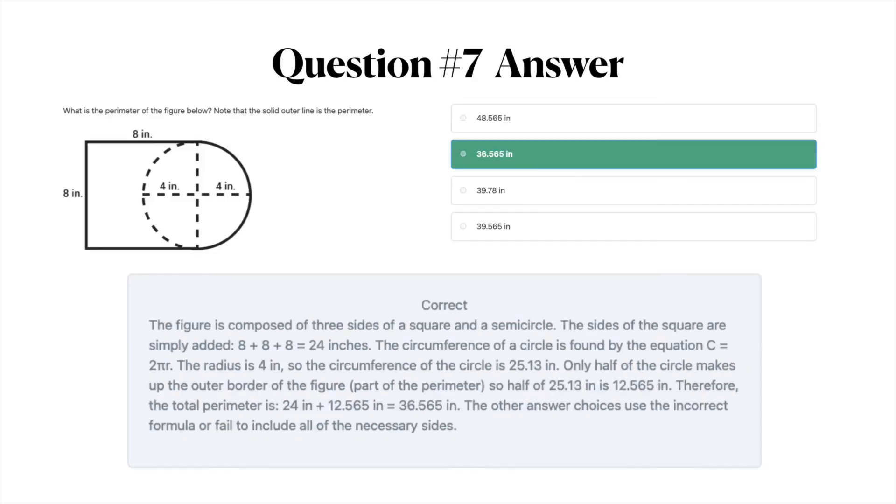The answer to question number seven is B, 36.565 inches. The figure is composed of three sides of a square and a semicircle. The sides of the square are simply added. Eight plus eight plus eight equals 24 inches. The circumference of a circle is found by this equation. Circumference equals two times pi times radius. The radius is four inches. So the circumference of the circle is 25.13 inches.